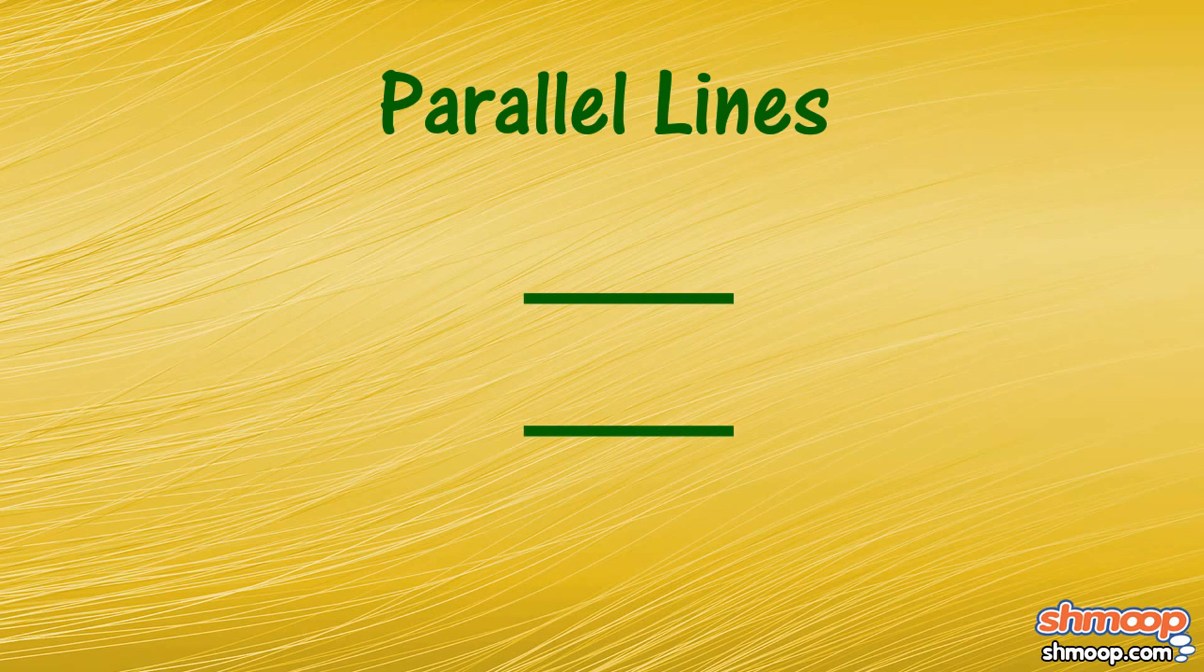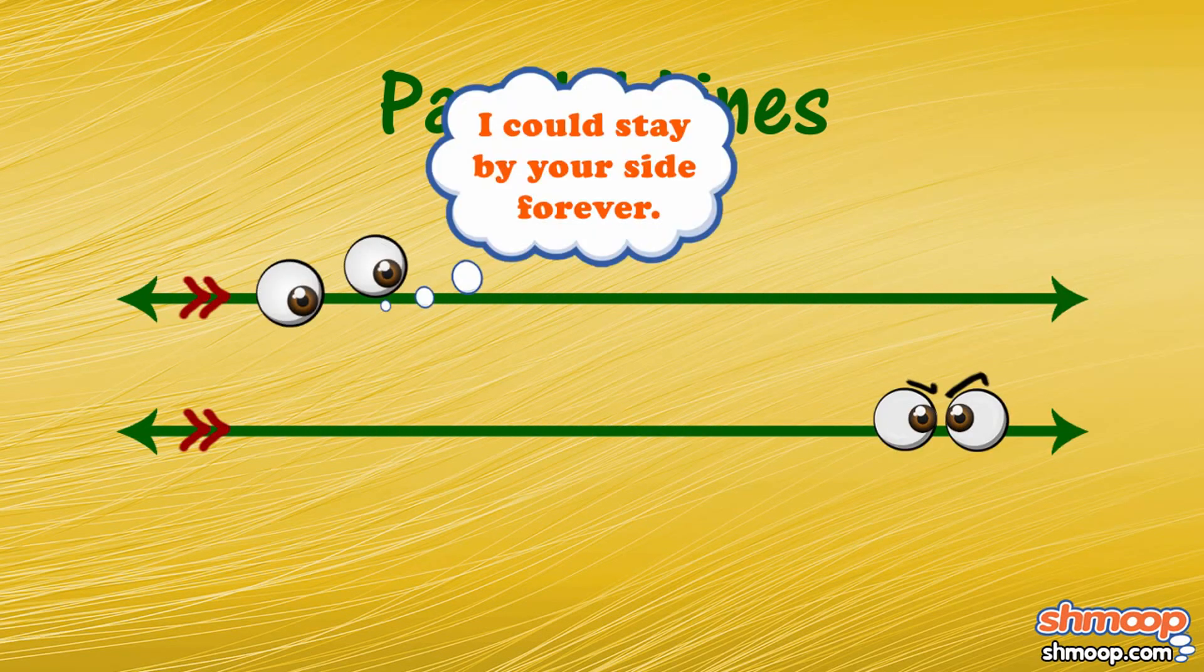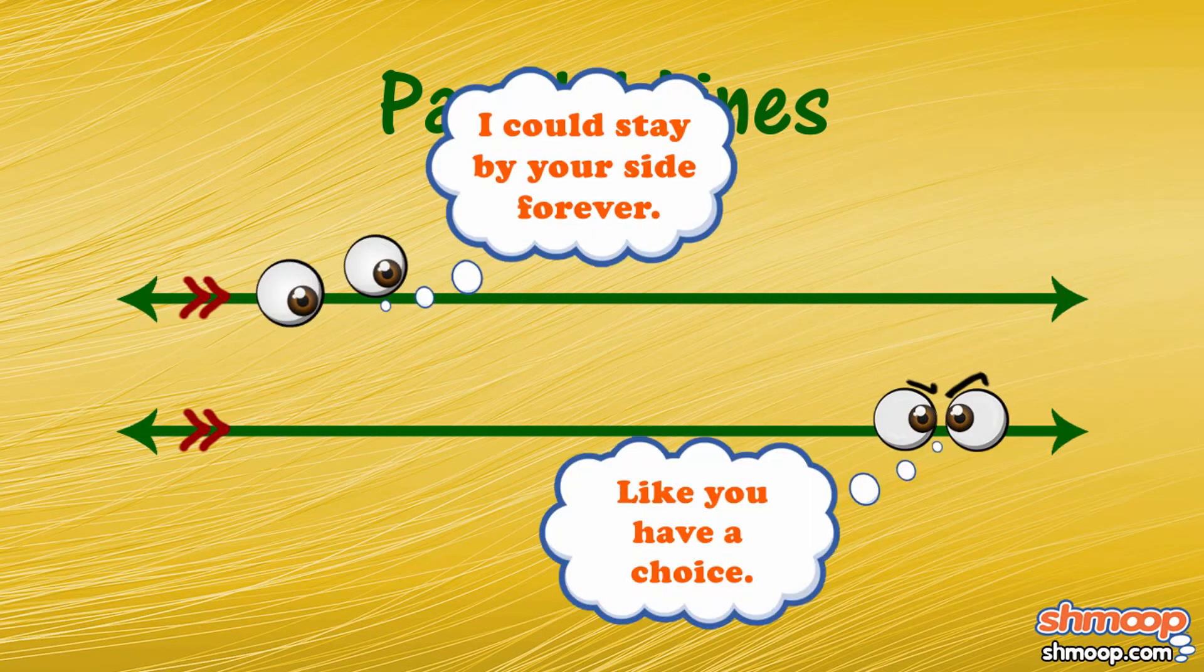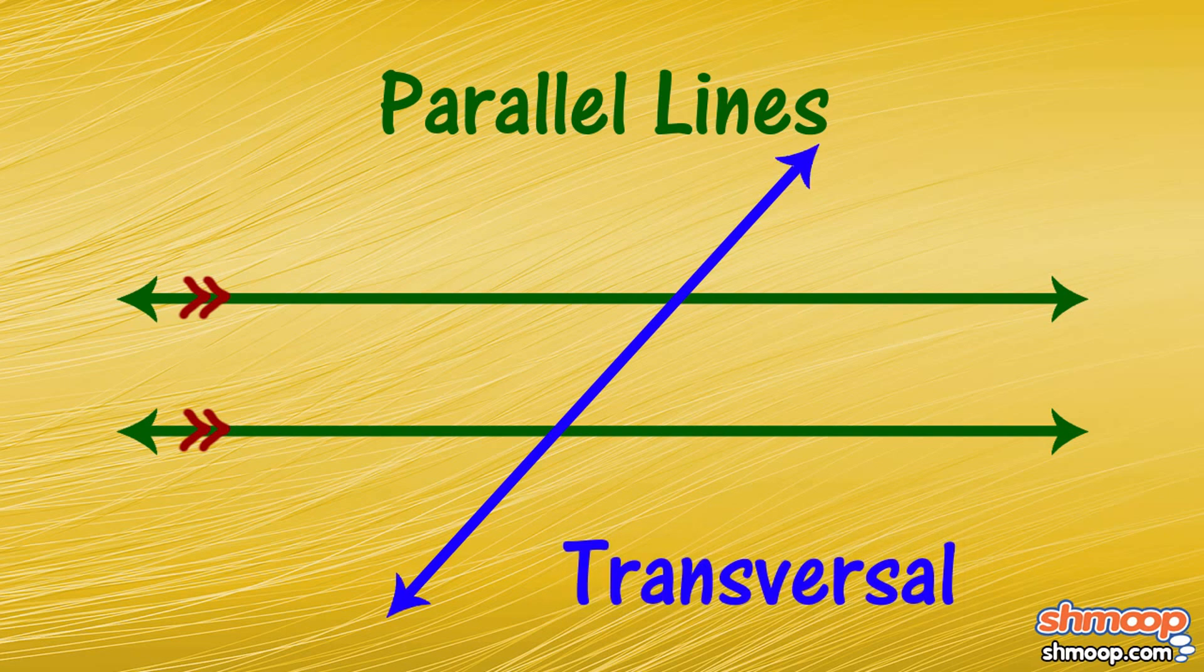Parallel lines never touch, but they always stand by their partner. Now that's love. When a transversal cuts across two parallel lines, it forms eight angles.